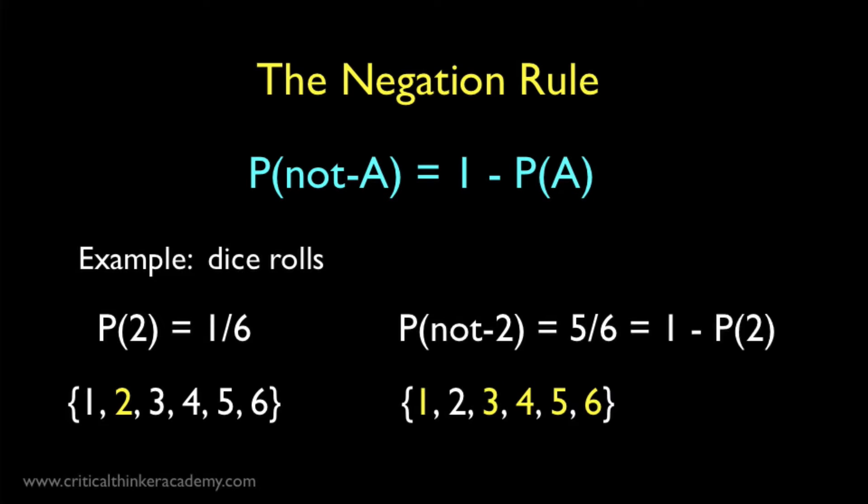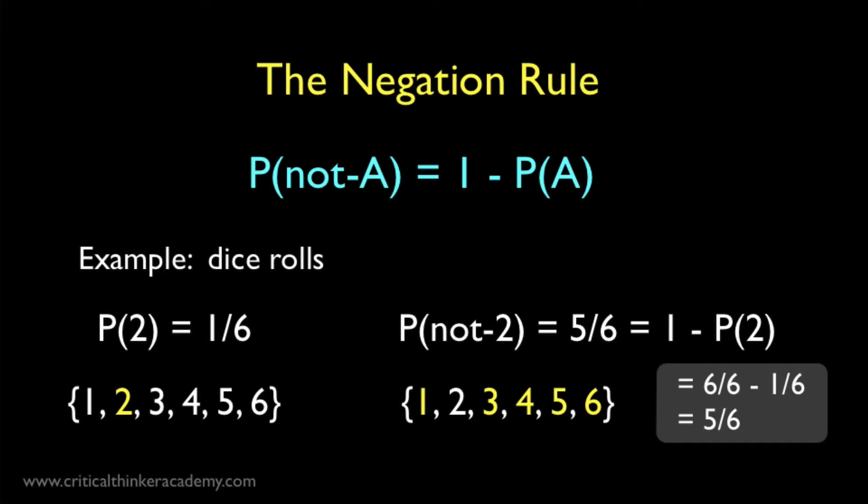But note that 5 in 6 is just 1 minus 1 in 6, or 1 minus P(2), the probability of rolling a 2. If that's not clear, just remember that 1 is equal to 6 over 6. So 6 over 6 minus 1 over 6 equals 5 over 6.